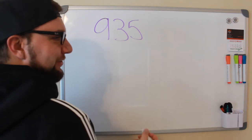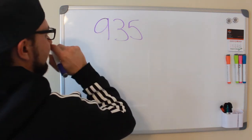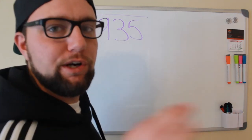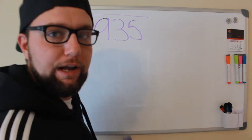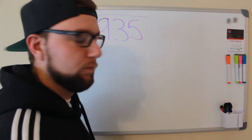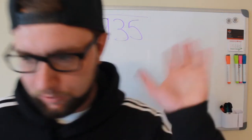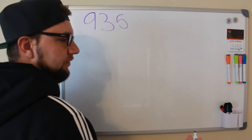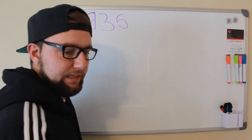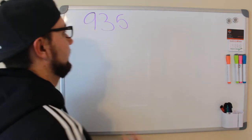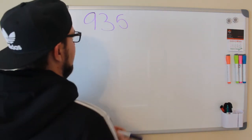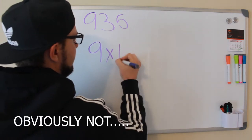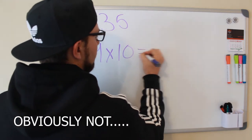Oh my god, I don't even know how to do long division anymore. Since I don't know how to do long division, we're going to have to do it a completely different way. So I'm just going to take the 9 and keep multiplying 9 until I get the closest I can to 935.